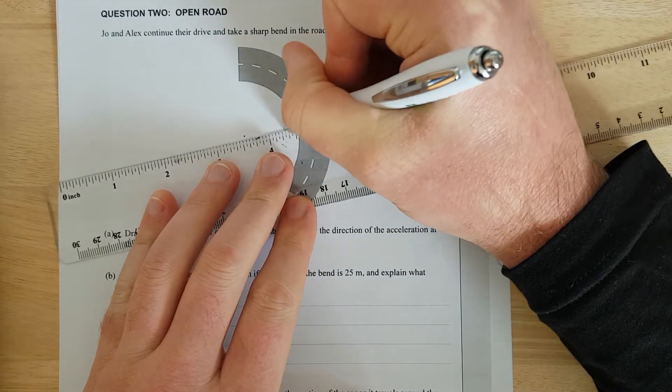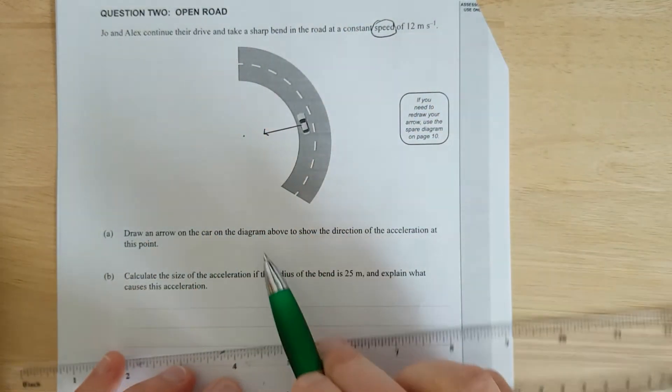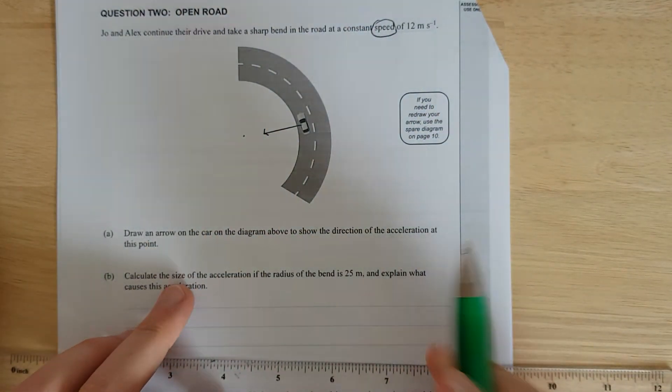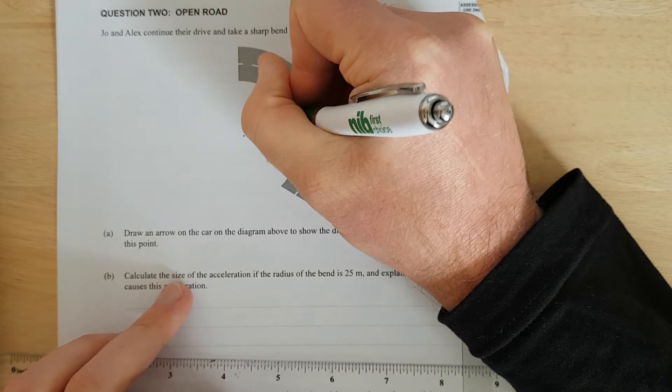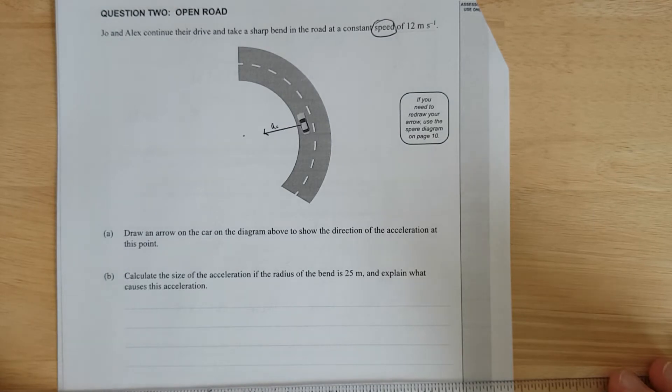And you're going to have an arrow pointing in towards it. And we're going to name this. This is going to be the acceleration. So we'll call this AC because it's a center pointing acceleration. Right, that's all they wanted.